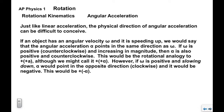The direction of angular acceleration can be tricky to interpret. If an object has angular velocity omega and is speeding up, alpha points in the same direction as omega. So if omega is positive (counterclockwise) and increasing, alpha is also positive — the rotational analogy to 'plus-plus a' (moving right and speeding up). If omega is positive but slowing down, alpha points in the opposite direction (clockwise) and is negative — the analogy to 'plus-minus a.'